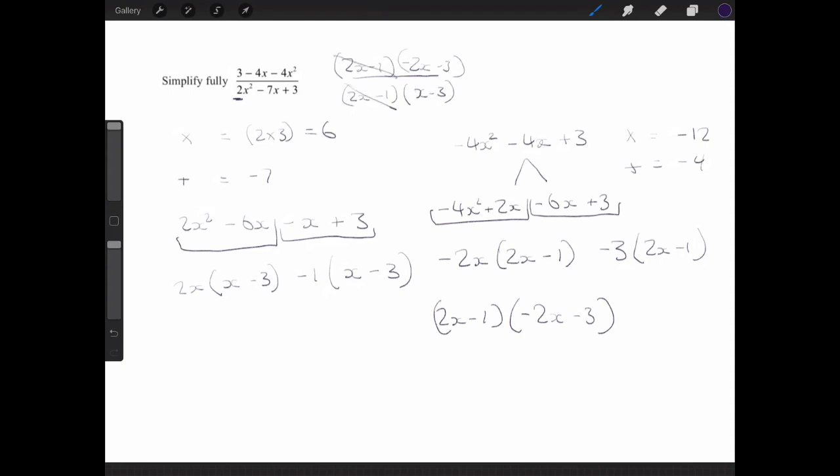They're the same factor so I can cancel those out, which gives me negative 2x minus 3 over x minus 3. And if I wanted to, what I could do is I can then rewrite it as negative 2x plus 3 over x minus 3.